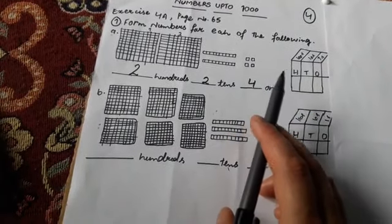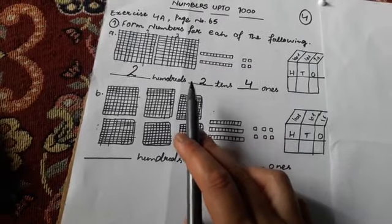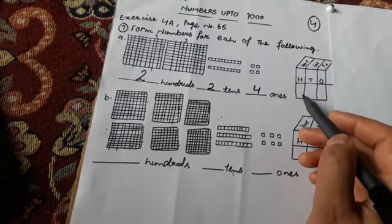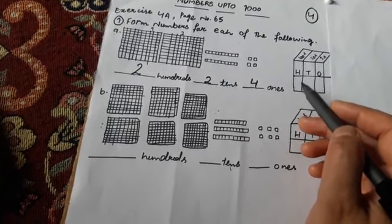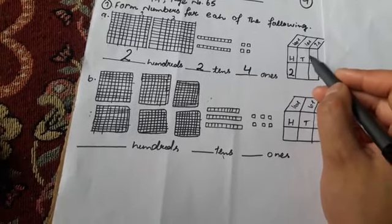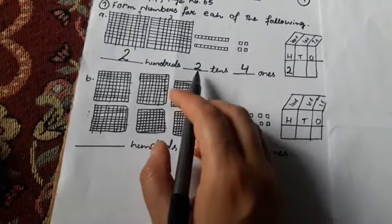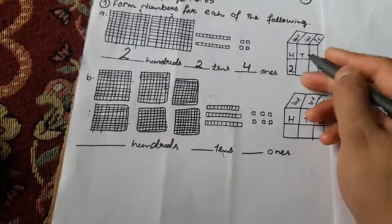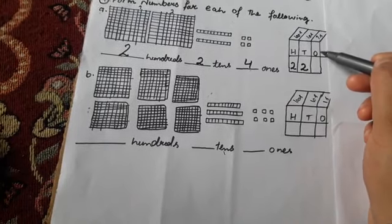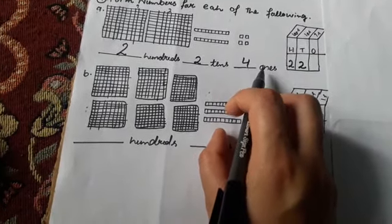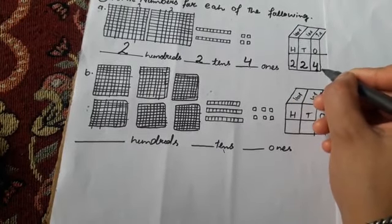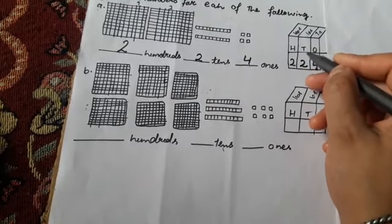Now we have to form the number. How many hundreds are here? Two. So we will write two under the head Hundreds — it means two hundreds. Then tens: how many tens are here? Two tens, so we write two under the head Tens. Then ones: four ones, so we write four. It makes two hundred twenty-four — two hundreds, two tens, four ones — 224.